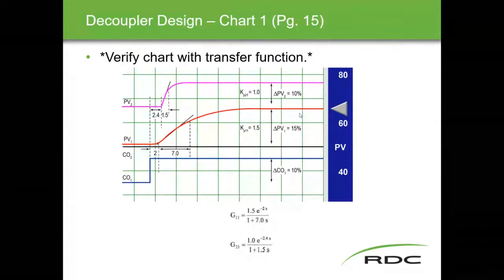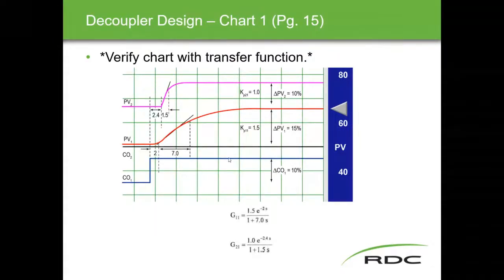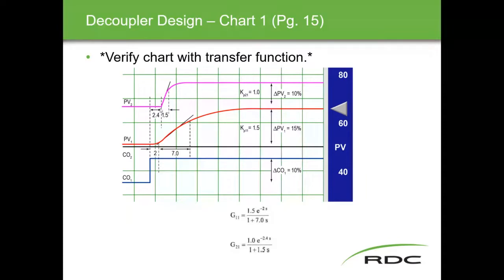We start with charts like we did last year to get the transfer functions. A controller output change of 10% gives us a gain of one. A 10% change producing a 15% response gives a gain of 1.5. Draw your intersecting line, your 63.2% dot, and get all your values to fill in the transfer function.